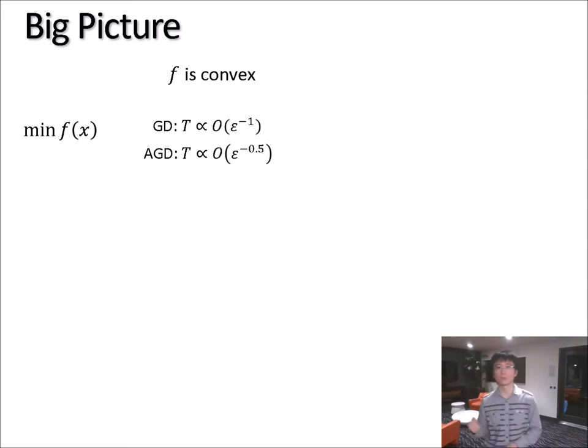To sum up, we have gradient descent and accelerated gradient descent. The latter is quadratically faster, and the latter also turns out to be optimal among the class of first order methods.